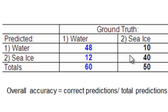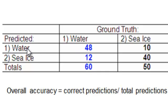Along the diagonal of the error matrix are the correct predictions. For example, there are 48 ground truth locations that in real life were water and on our classified raster were predicted to be water. And there were 40 ground truth points that were sea ice, and those were all correctly predicted in our classified raster to be sea ice.